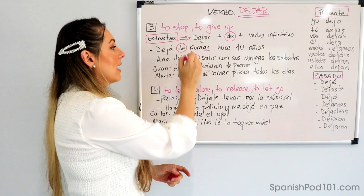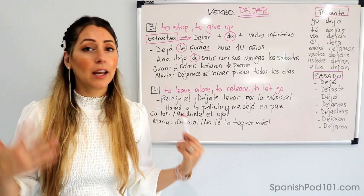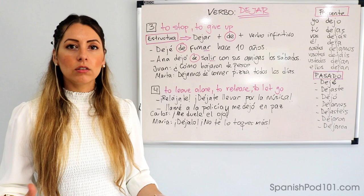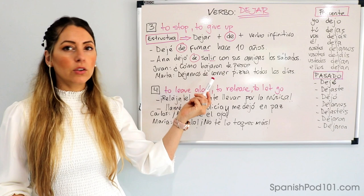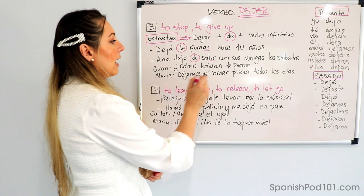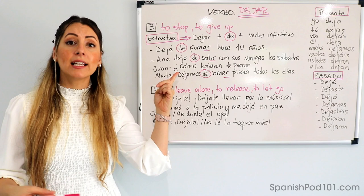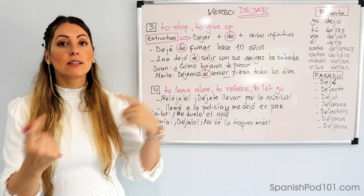Ana dejó de salir con sus amigas los sábados — Ana stopped going out with her friends on Saturdays. Juan pregunta: ¿Cómo bajaron de peso? And Marta replies: Dejamos de comer pizza todos los días — we stopped eating pizza every day. Dejé means I stopped, dejó refers to Ana (she stopped), and dejamos is nosotros — we stopped. That's how the verb dejar changes depending on the person performing the action.